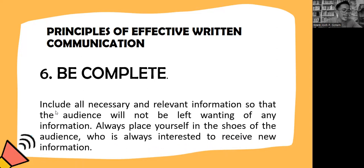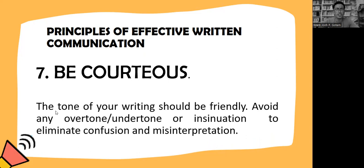Be complete: include all necessary and relevant information so that the audience will not be left wanting any information. Always place yourself in the shoes of your readers, who are always interested in receiving new information. And lastly, be cautious: the tone of your writing should be friendly. Avoid any overtone, undertone, or insinuation to eliminate confusion and misinterpretation. And that's the seven C's of the principles of effective written communication.